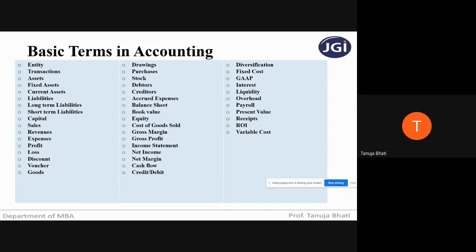Next is revenue. Revenue is nothing but the income generated from normal business operations. Revenue also includes discounts and reductions from merchandise that has been returned. So revenue is not only your sales but also net sales after you deduct discounts or sales returns. Where is revenue shown in your financial statements? It is depicted in your profit and loss account.